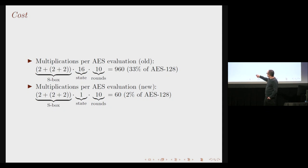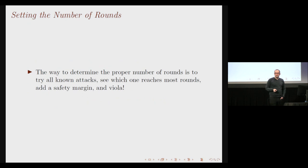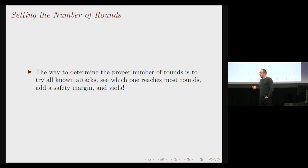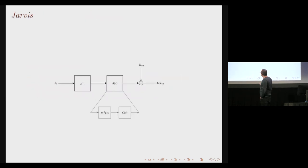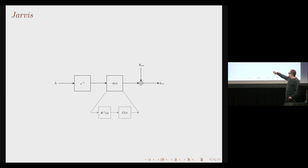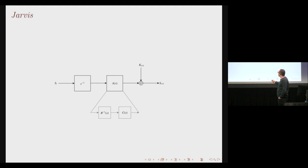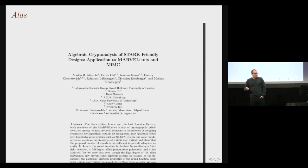We still need to determine the number of rounds. The standard approach in symmetric key design is to try all known attacks, find which reaches the largest number of rounds, add a safety margin, and that is your cipher. Applying the AES security argument to this design, we found we need about the same number of rounds as AES. The resulting algorithm is called Jarvis: the input goes into the multiplicative inverse, then through a polynomial that is a composition of two linearized low-degree polynomials (one directly, one inverted), followed by key injection — and that is one round.